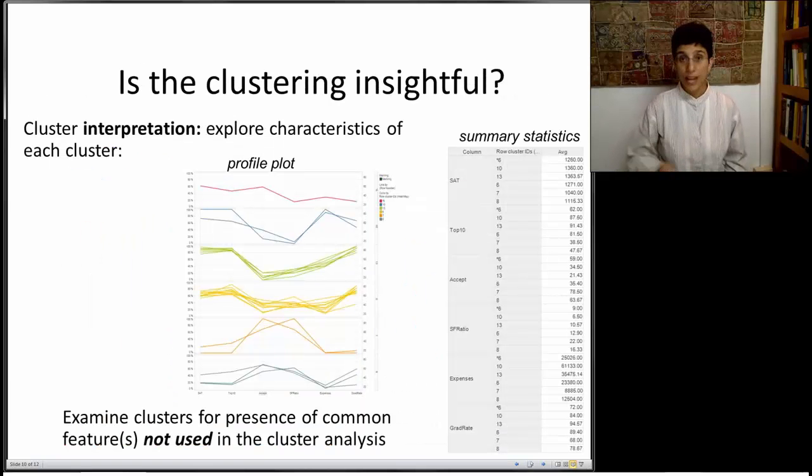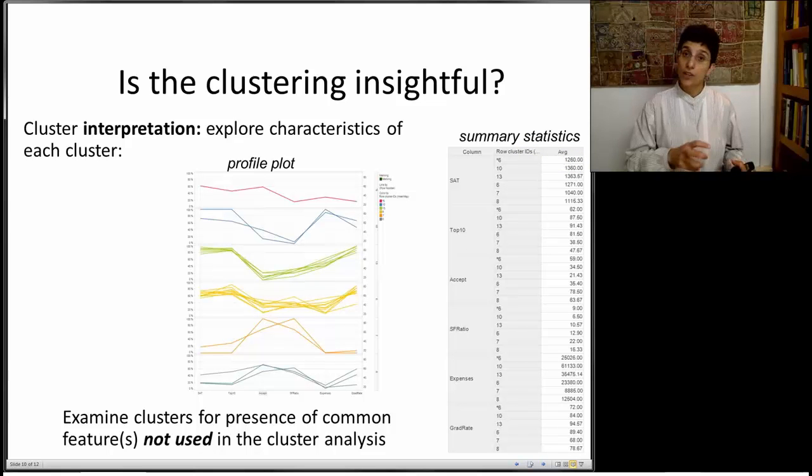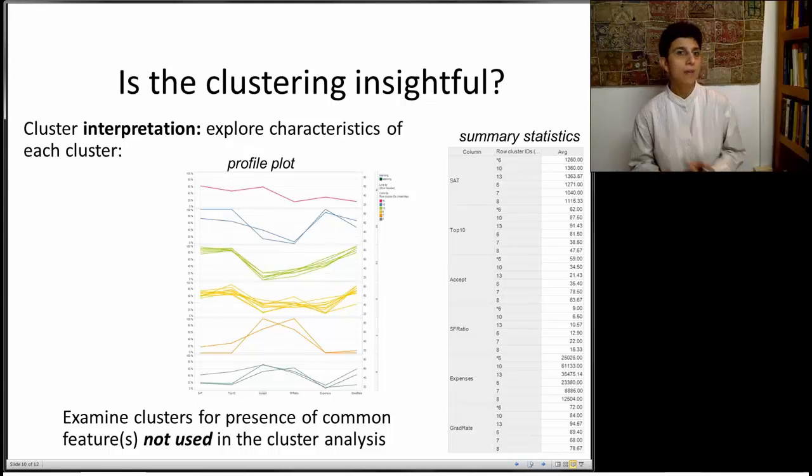As I said, once we have these clusters, we're going to want to look and compare them and see whether there's any insightful stuff coming out of it. We'll look at different summary statistics. You can compute, for instance, the average expenses, or the average student quality in each one of these different clusters, and see whether the clusters really separate the universities in terms of expenses. Maybe they separate them out in terms of student quality. Maybe they separate them out in terms of something else. So by looking at summary statistics, we can get a feel of what is different about different clusters.